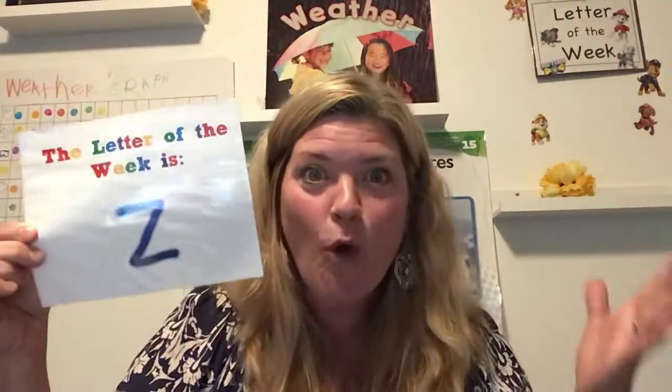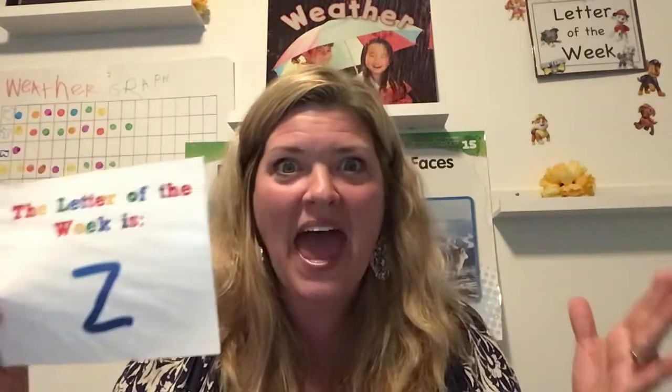Friends, we have made it to the end of the alphabet. We started at A and we went all the way — all 26 letters to Z. And that's a big deal because, friends, you remembered what all the letters look like. So when I say, what does an A look like?